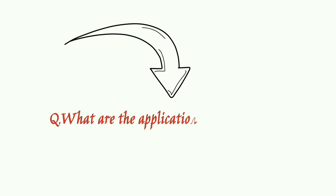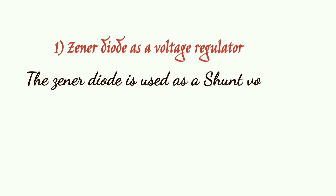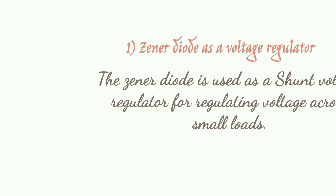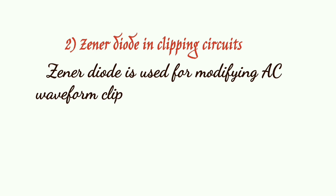Next, what are the applications of the zener diode? First, the zener diode as a voltage regulator — the zener diode is used as a shunt voltage regulator for regulating voltage across small loads. Second, the zener diode in a clipping circuit — the zener diode is used for modifying AC waveforms.